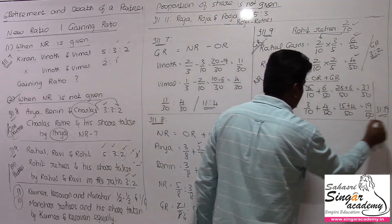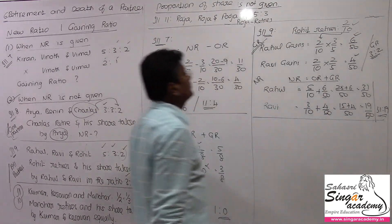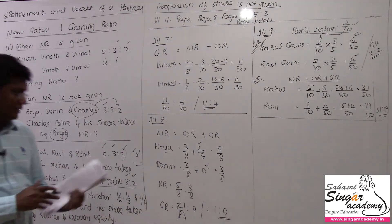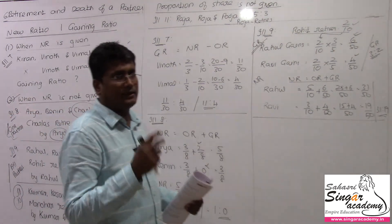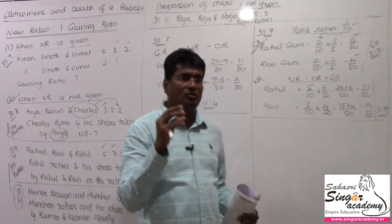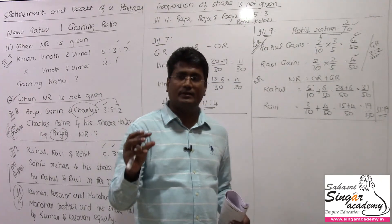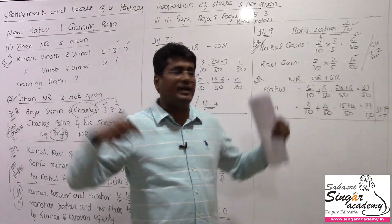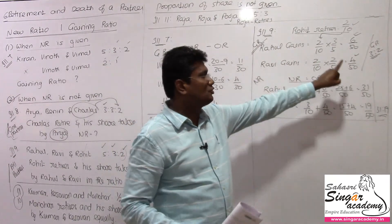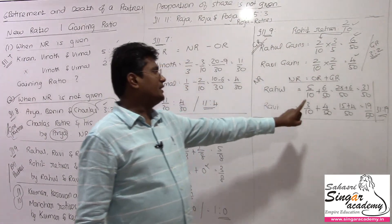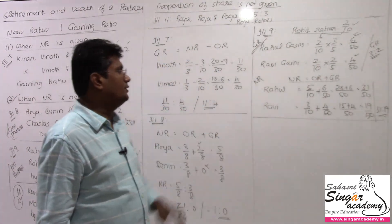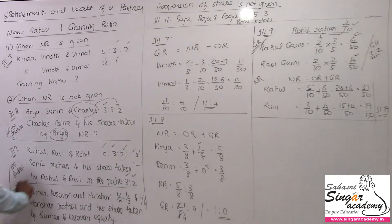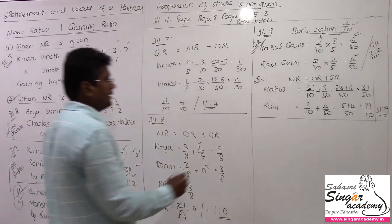So gaining ratio is 3 is to 2 and new ratio is 31 is to 19 for Illustration 9. Now I am going to solve Illustration 10.